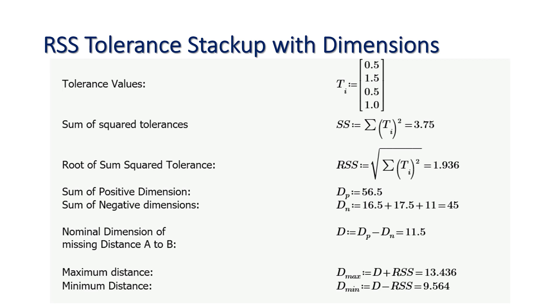The sum of positive dimensions that includes the missing distance also, that is equal to 56.5. This is the adjusted nominal dimension. And the adjusted nominal dimensions of all the negative dimensions are 16.5 plus 17.5 plus 11, that is equal to 45.